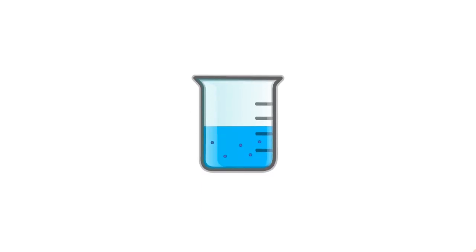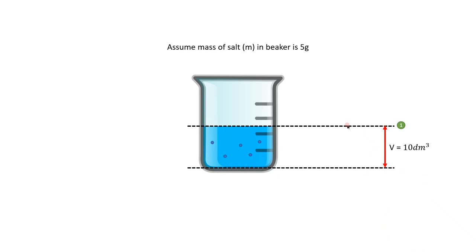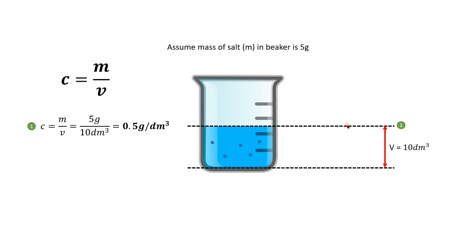This makes sense because if we consider a very simple example of a beaker of water containing salt. If we assume that there are 5 salt particles each with a mass of 1 gram, then the total mass of salt in the beaker is 5 grams. If the total volume of water in the beaker is 10 dm³, we can work out the salt concentration using concentration equals mass over volume, giving us 5 divided by 10 which equals 0.5 grams per dm³.